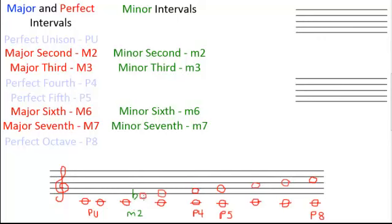Let's continue on with our minor third. We want to lower that E by a semitone to become a minor third. Our major third sounds like this. Now, when we lower that by a semitone to an E flat, our minor third now sounds like this.